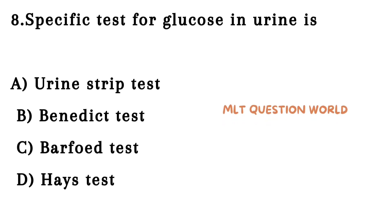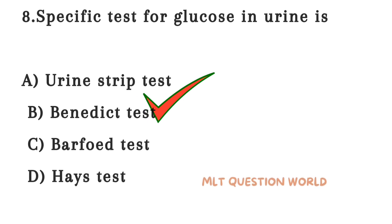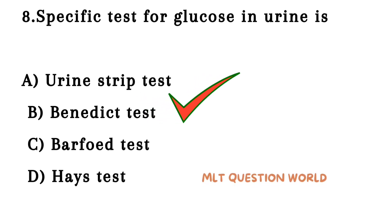Next question. Specific test for glucose in urine is: Option A. Urine strip test, Option B. Benedict's test, Option C. Barfoed's test, Option D. Haze test. The right answer is Option B — Benedict's test. The specific test for glucose in urine is Benedict's test.